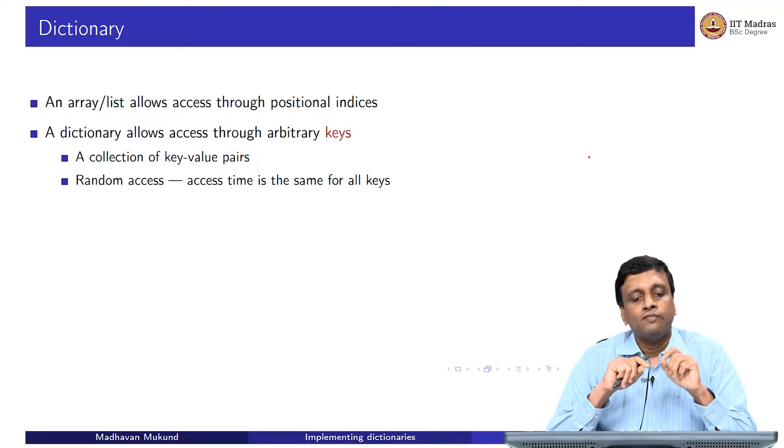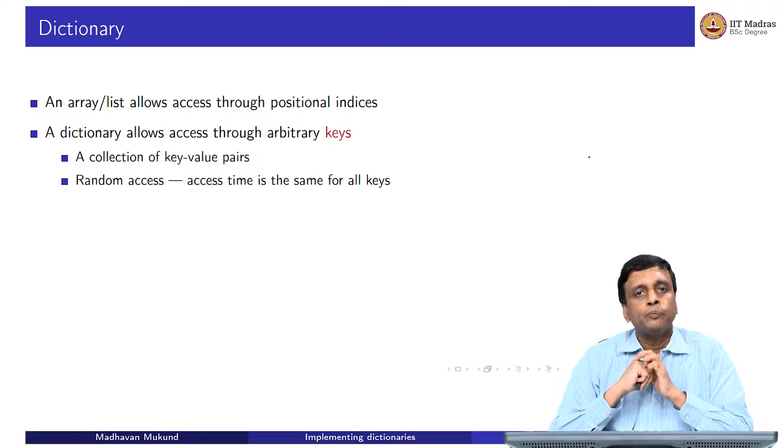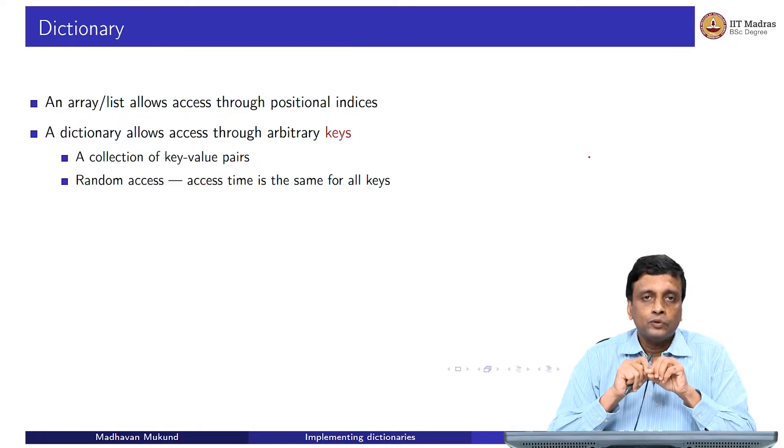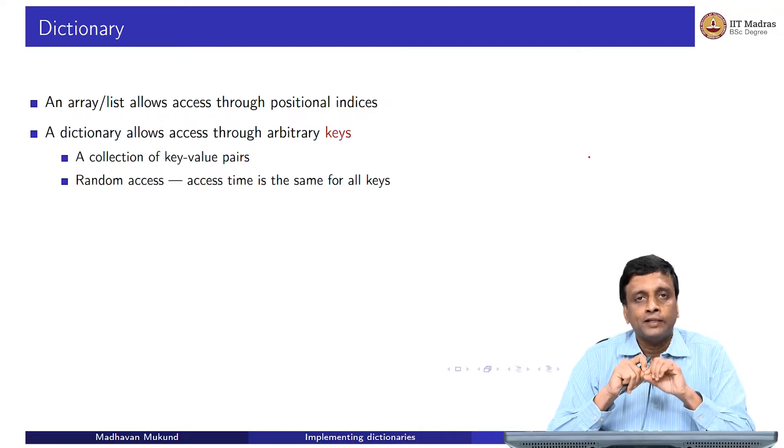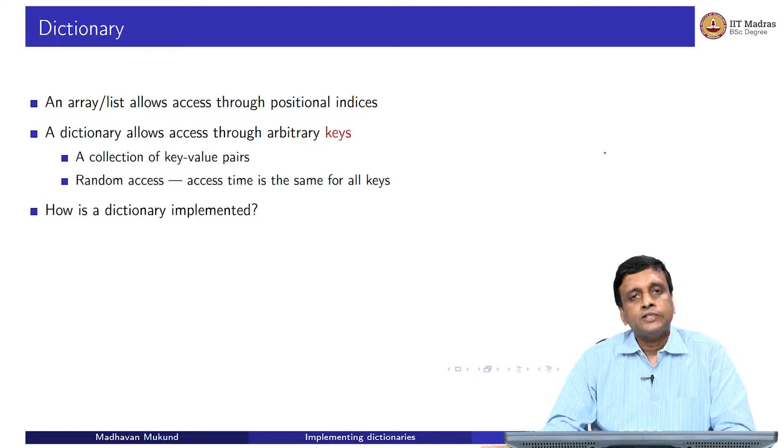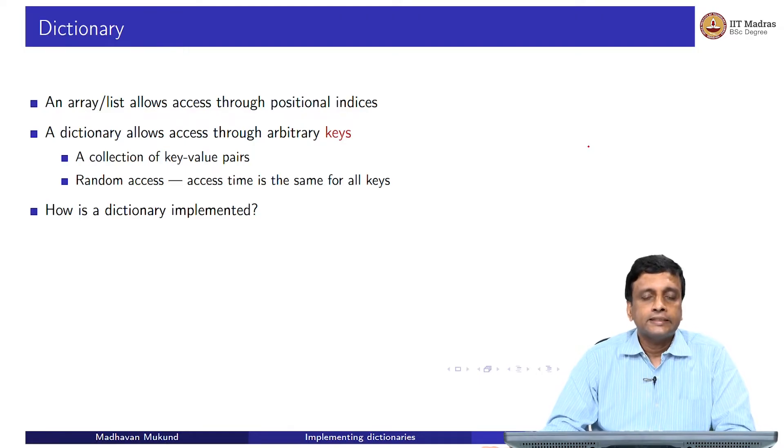We want what is called a key value store. But we want it to behave still like an array in the sense that if we pass a key to this dictionary, we would like it to return the value in equal time for any key. This is the principle of random access, it should not depend on what the key is, it should take roughly the same time to give me the value regardless of what key I provide.